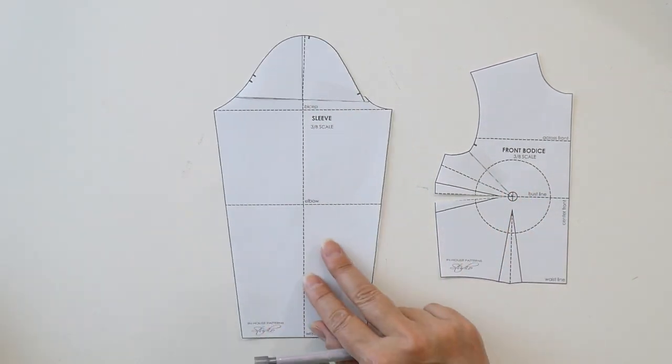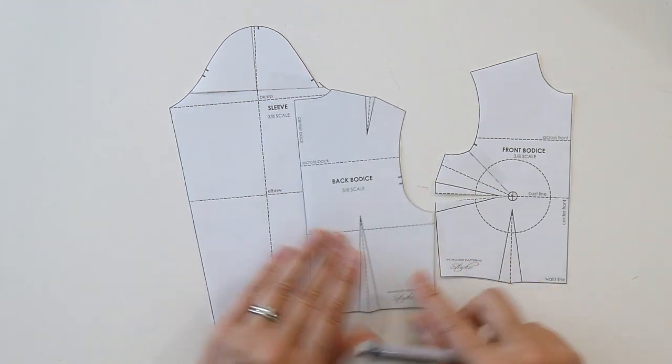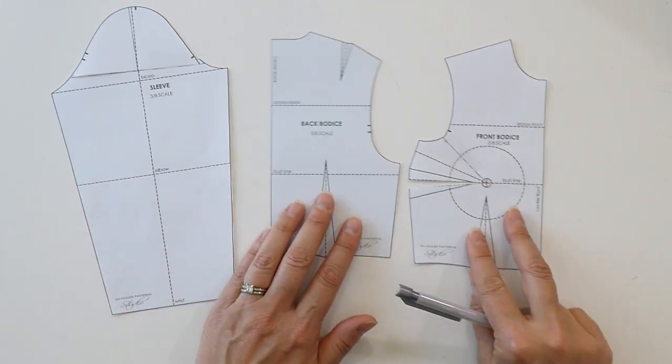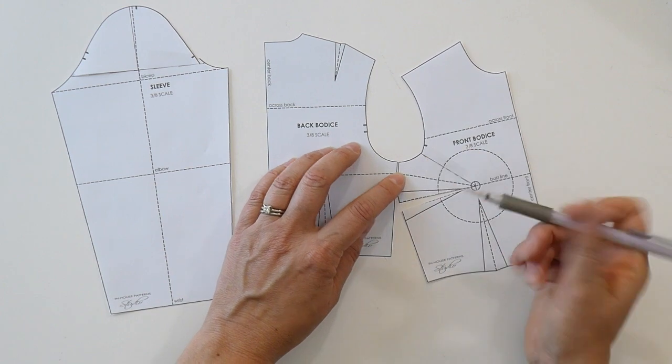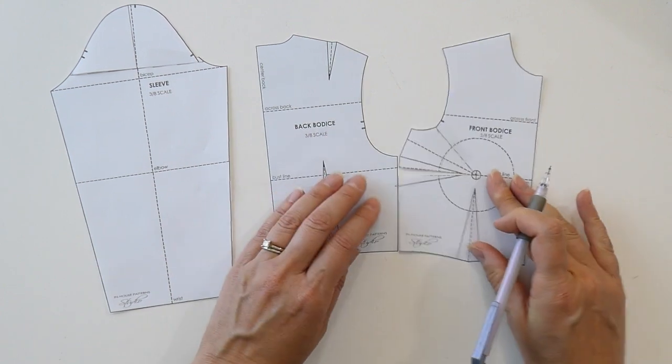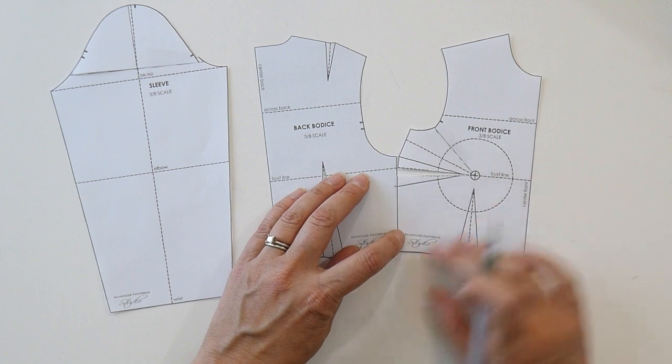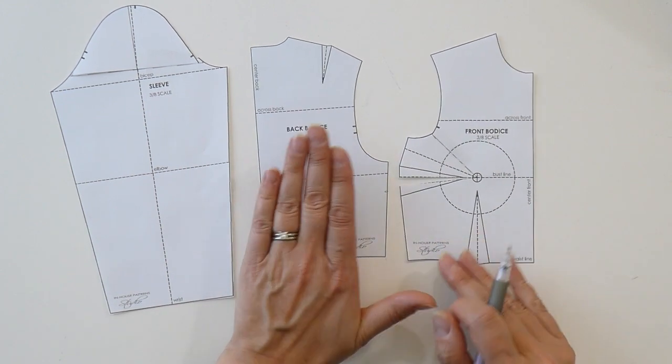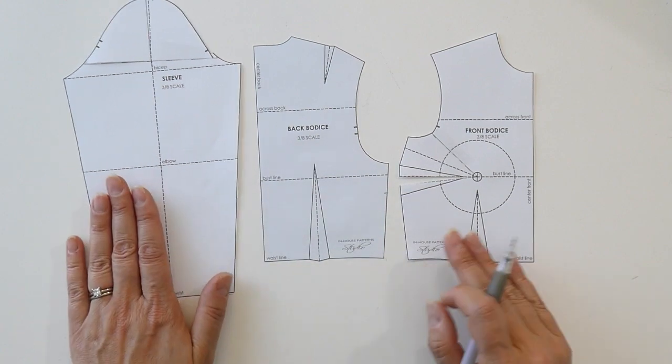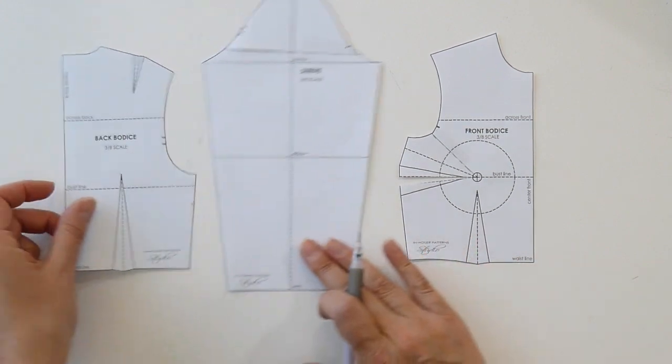Because what you're going to notice now is our back pattern piece isn't affected at all. So you can see here that my seam line length from front to back, once my dart is closed, remains exactly the same. So we don't need to make any changes to our back pattern piece in order to accommodate this gaping front armhole.